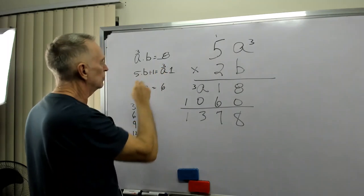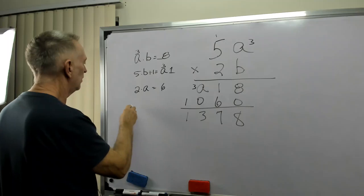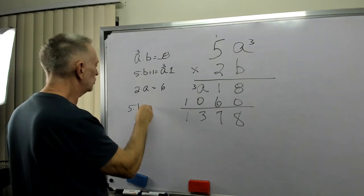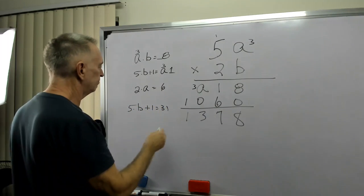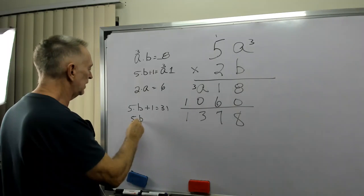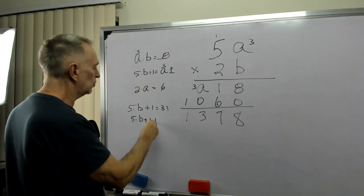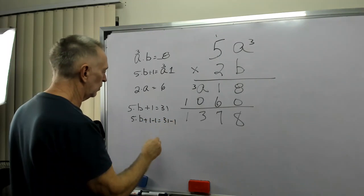Well, what was A? It was 3. So, now I could have 5 times B plus 1 equals 31. Well, let's subtract 1 from both sides.